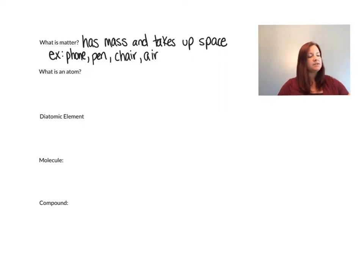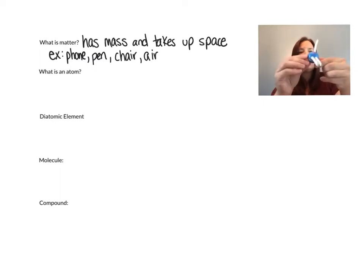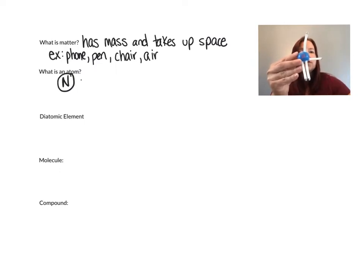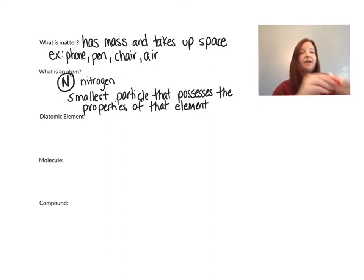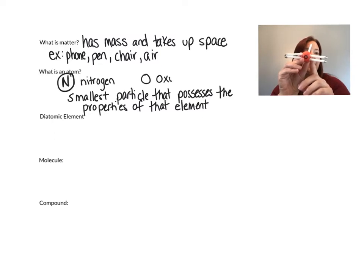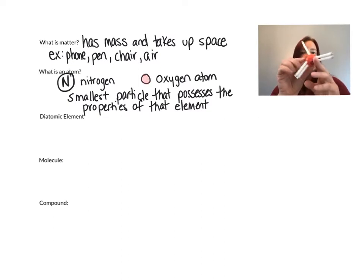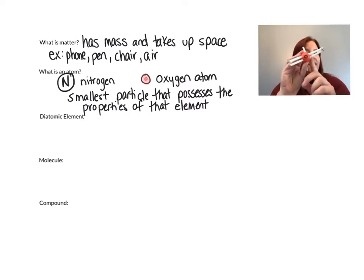All of matter is made up of atoms. I've got these little models here to represent some atoms for us. This one has an N on it for nitrogen. Atoms are the smallest particle that possesses the properties of that element. For example, every single atom of oxygen is going to have the same properties — always the same density, always the same boiling point, melting temperature. All the properties are going to be the same. These little spikes represent electrons — we'll talk about those later. But for right now, this is an atom.